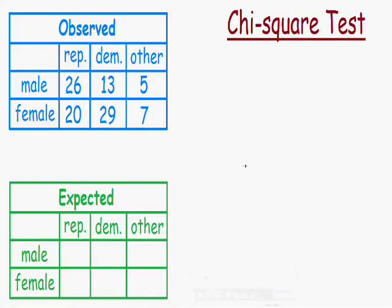Welcome to my second video on Chi-Square Testing. In this example we're going to use contingency tables to determine if somebody's gender has any influence on the political party they support. We asked a group of 100 males and females if they were Republican, Democrat, or another political party.